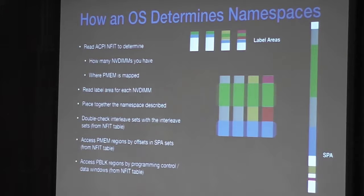To put it all together: how does an operating system determine how to access the namespaces? First, it reads the ACPI NFIT table to determine how many DIMMs you have, then determines where in the system physical address space the PMEM is mapped. It uses the ACPI AML methods to read the label areas, then pieces together the labels into namespaces. It double-checks that the interleave sets written in the label areas are the same as those from ACPI — otherwise it may need to write a completely new set of label areas. Finally, it can access PMEM labels via the SPA regions and PBLOCK regions by controlling the data window into the NVDIMMs.